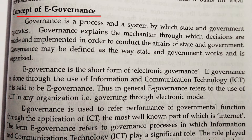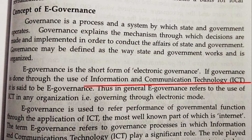Let us first discuss the meaning of e-governance. Governance is a process or system by which administration is carried on. E-governance is a modern concept and it is short for electronic governance. Here, information and technology plays a very important role. Governance through the use of information and communication technology is said to be e-governance. It is used to refer to the performance of government functions through the application of ICT, the most well-known part of which is the internet.